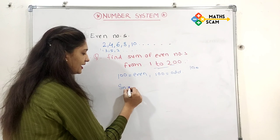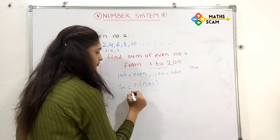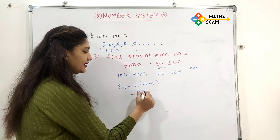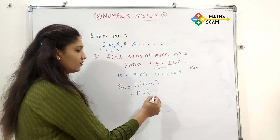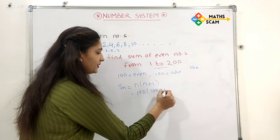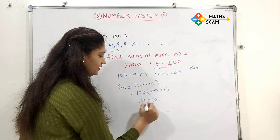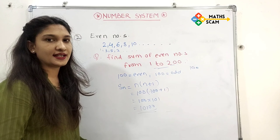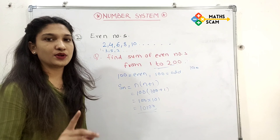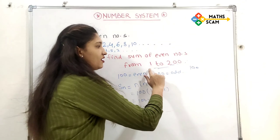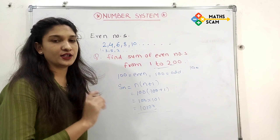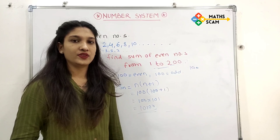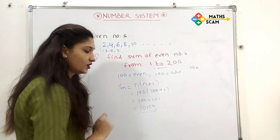So the formula is n into (n+1). Here n is 100. So 100 into (100+1) = 100 into 101. The answer is 10100. The even numbers from 1 to 200 are 2, 4, 6, 8, ... 198, 200, and their sum is 10100.